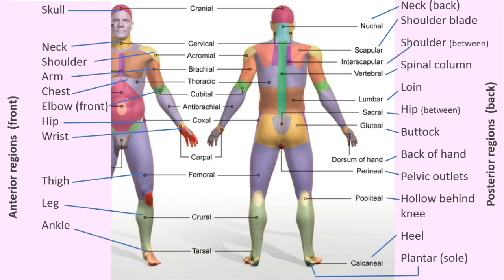Let's look at the anterior region, which is the front of the body. The dorsal or posterior is the back. The skull is called cranial, neck is cervical, shoulder is acromial, arm is brachial, chest is thoracic, the front of the elbow is called the cubital — we have the antecubital — and in the back, the hip is coxal, wrist is carpal, thigh is femoral, leg is crural, and ankle is tarsal.